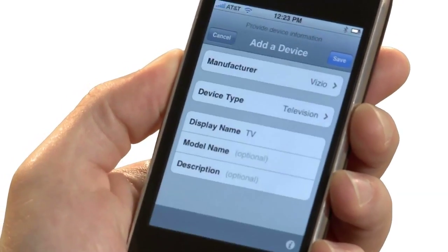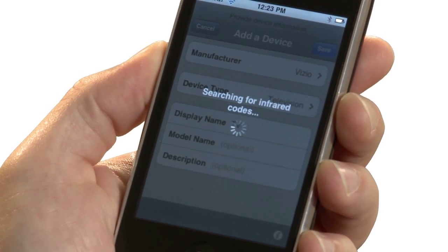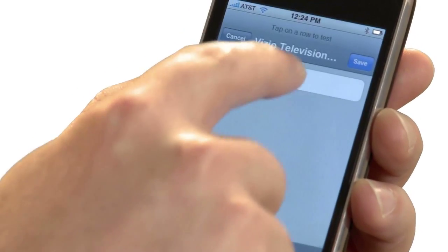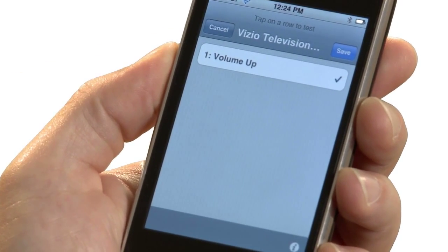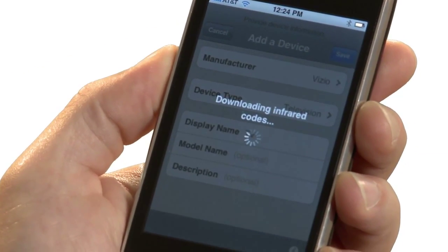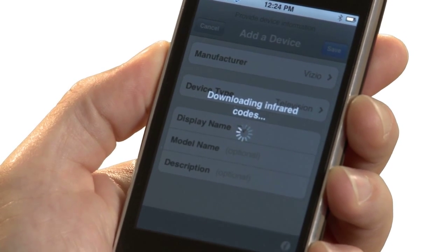When you hit the Save button, the RedEye searches through the online database for infrared codes that match the manufacturer and device type you have specified. Sometimes there are a few different options, so you may get back a list of possibilities. You can tap on each item in the list to test a command. Once you have found a set of codes that works for your device, you can click Save to download the remainder of the codes and install them on your RedEye device. This can take a couple of minutes.